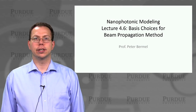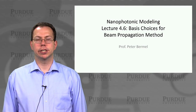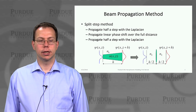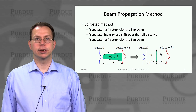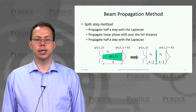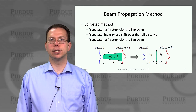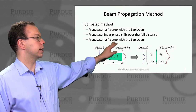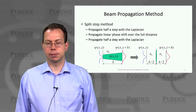In the last lecture we introduced the beam propagation method and said that although it looks simple, it could actually have a lot of interesting applications both for fiber propagation as well as non-linear types of problems. Now we're going to explore in more detail our solution method. Here we have the so-called split-step method, because we rewrote the solution to the BPM equation as e to the hu over 2, times e to the hw, times e to the hu over 2. That means there are basically three steps in the propagation: propagate half a step with the Laplacian (e to the hu over 2), then propagate a linear phase shift over the full distance (e to the hw), and then finally another half step with the Laplacian. This allows us to map our starting psi into psi propagated along steps of size h.